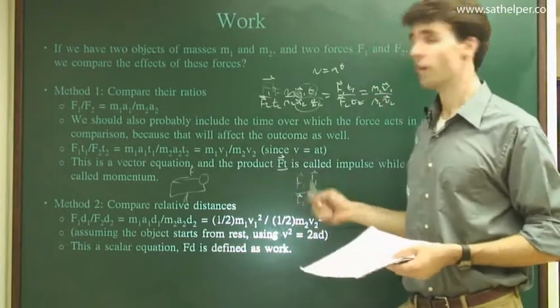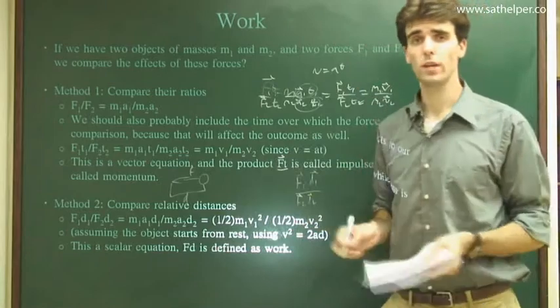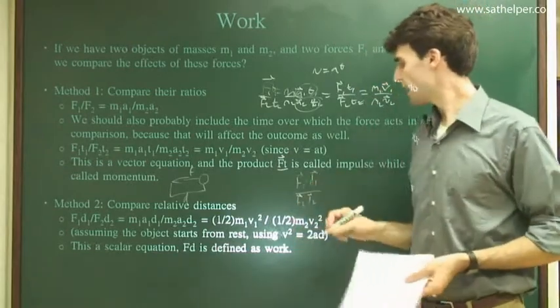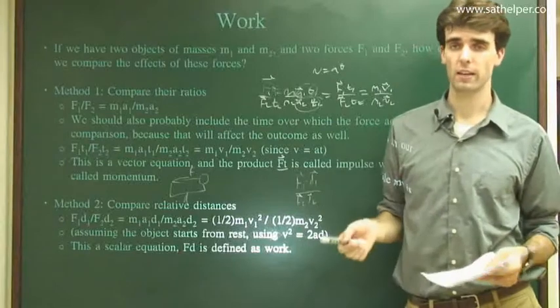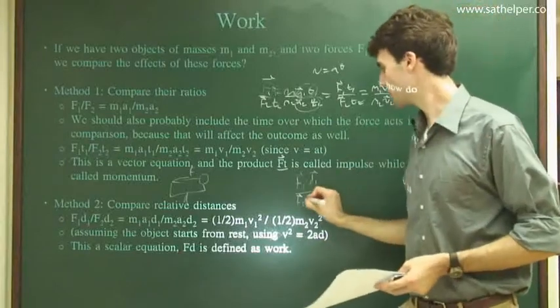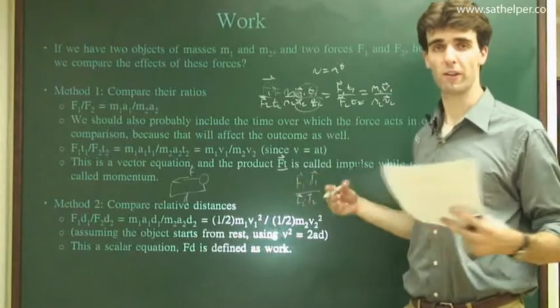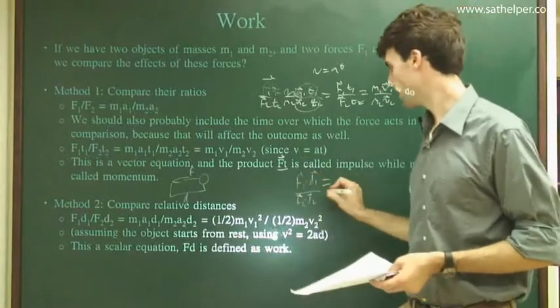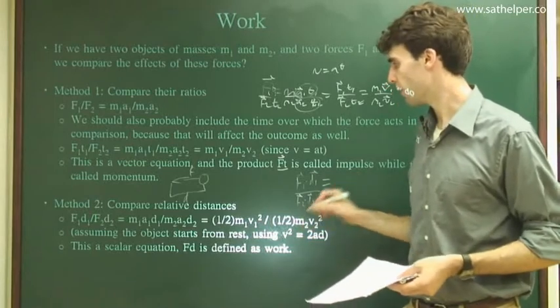And notice we're multiplying two vectors together. We haven't talked about how to do this, but it's called the dot product, F dot D, and that involves taking, well, we'll see that in a second. But the point is, you're going to get a scalar quantity out of this when you multiply the two vectors together. So we're going to lose all directional information and just get a scalar equation.